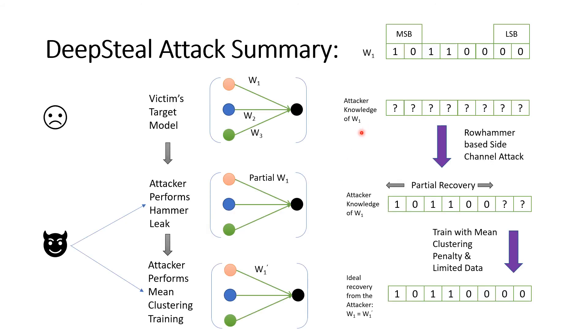Let's take the W1 weight as an example. First, the attacker performs the rowhammer leak to recover partial bits. Then, he will perform the mean clustering training algorithm to ideally recover all the bits of W1.